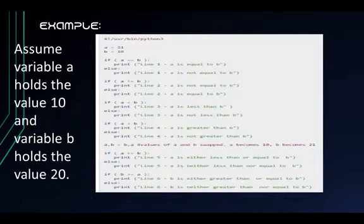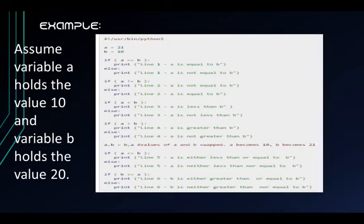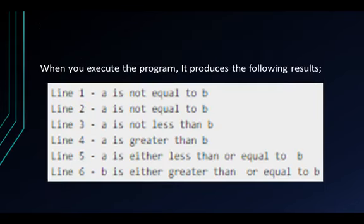Now for an example, let's assume that variable A holds the value 10 and variable B holds the value 20. Using the comparison operators, we will get the relationship between A and B. When you execute the program, it produces the following results.